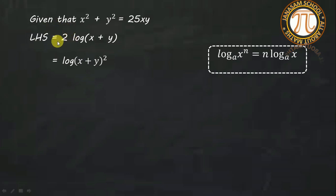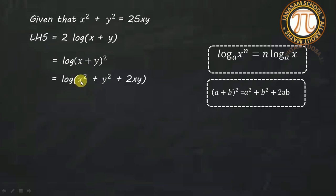This is the (a + b)² algebraic identity formula. This gives us a² + b² + 2ab. So this is log(x² + y² + 2xy).